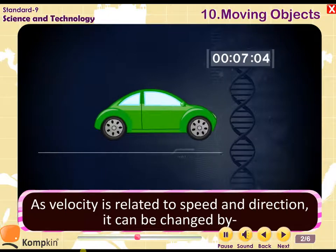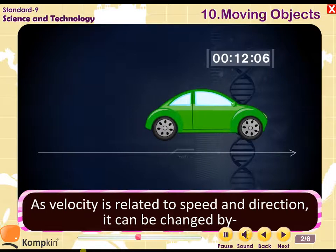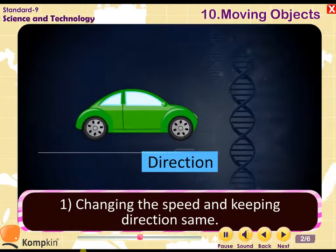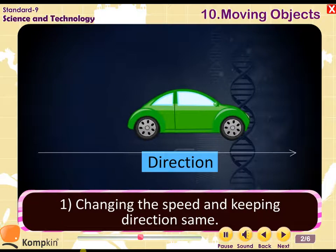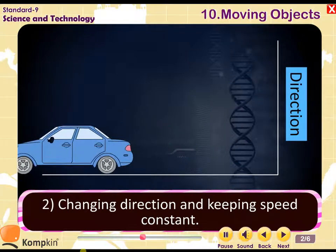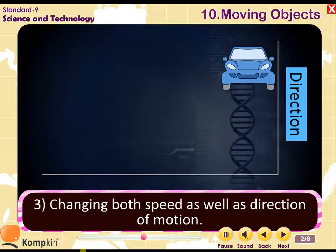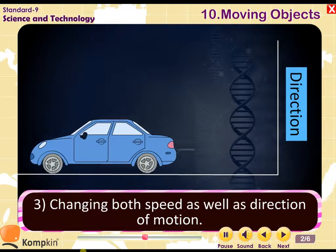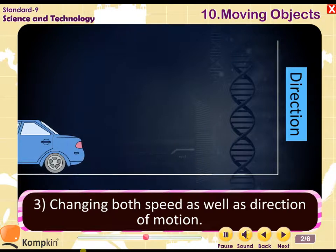As velocity is related to speed and direction, it can be changed by: 1. Changing the speed and keeping direction same. 2. Changing direction and keeping speed constant. 3. Changing both speed as well as direction of motion.